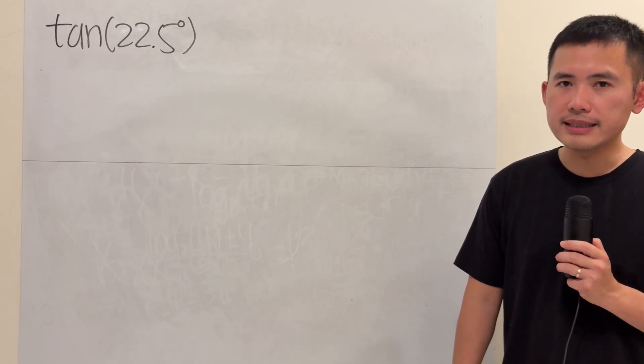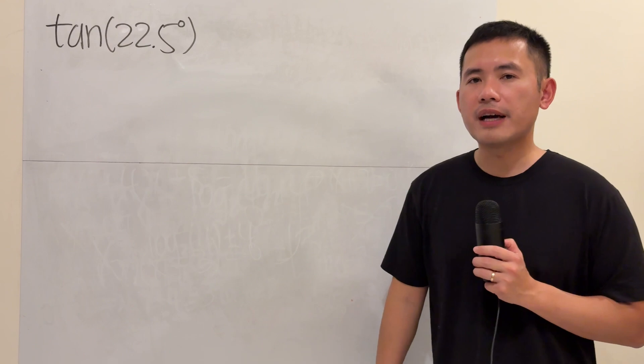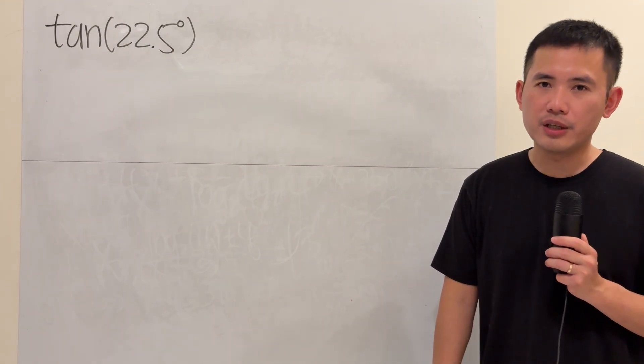So if you're taking a test and the question is asking you to find the exact value for tangent of 22.5 degrees, then most likely you'll just be using the half-angle identity for tangent, right?